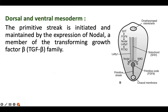The primitive streak is initiated and maintained by expression of Nodal, a member of the transforming growth factor beta (TGF-β) family. In this picture you can see the structure called the primitive node and the primitive streak. The primitive streak is initiated and maintained by expression of Nodal, a TGF-β family member.